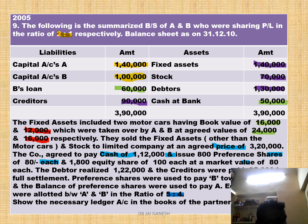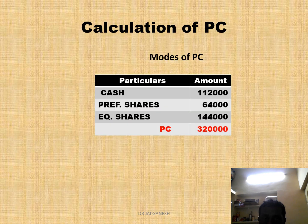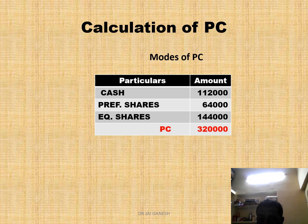Equity shares are to be distributed between A and B in the ratio of 5 to 4 as specified in the question. To recap: PC is Rs. 3,20,000 — out of that, Rs. 1,12,000 is cash, Rs. 64,000 is preference shares (800 into 80), and Rs. 1,44,000 is equity shares (1,800 into 80).